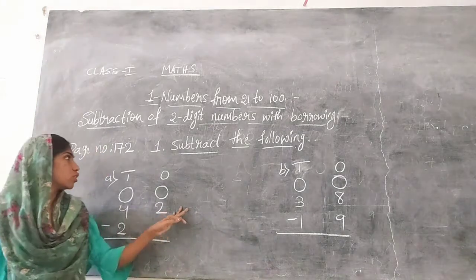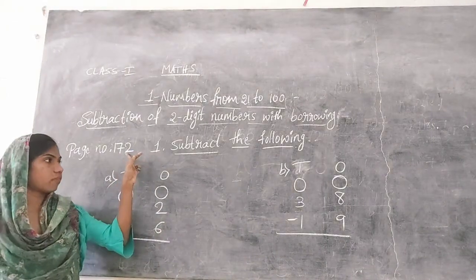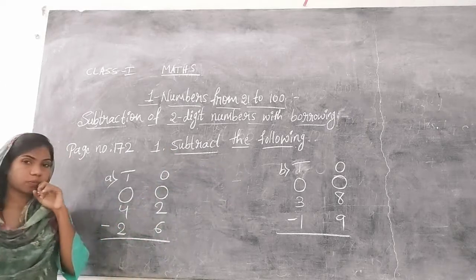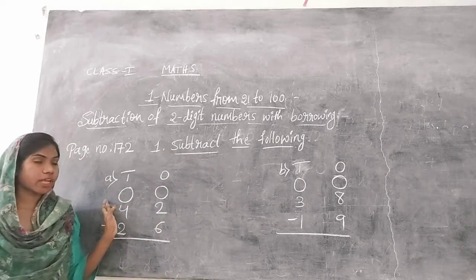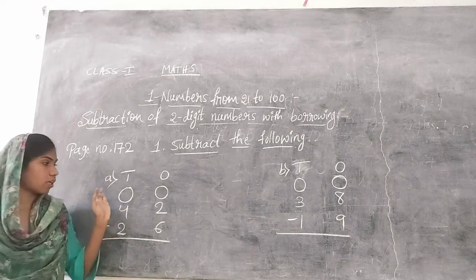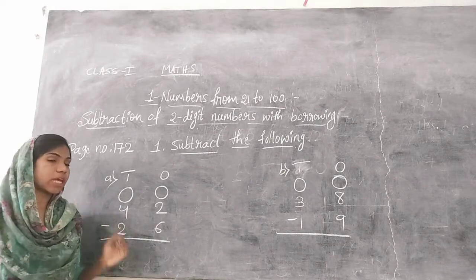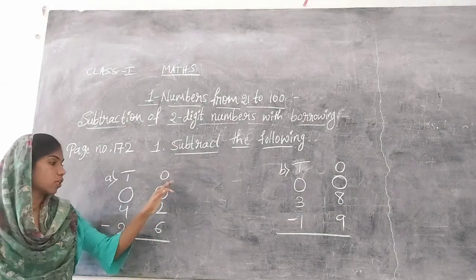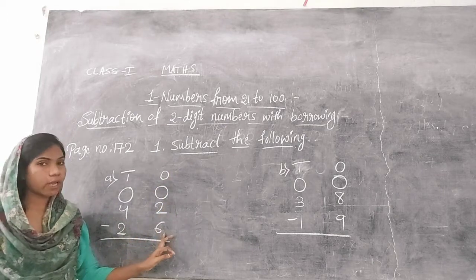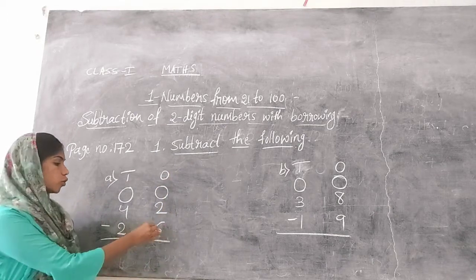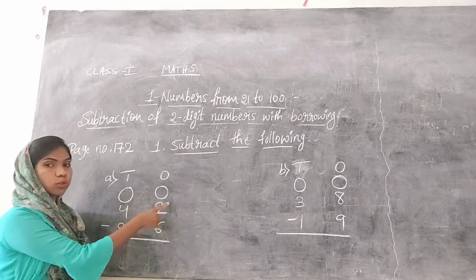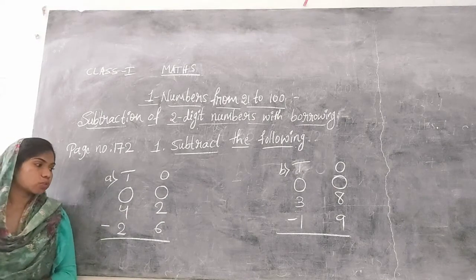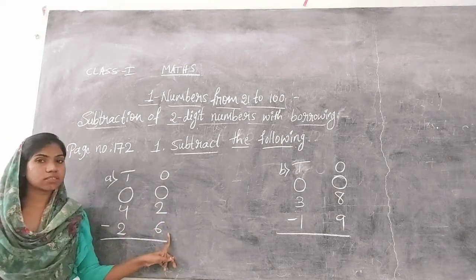Now open your page number 172. In the first exercise, subtract the following. In subtraction, always subtract from the ones place first. In the ones place we have 2 minus 6. Is it possible to subtract 6 from 2? No, because 2 is smaller than 6.